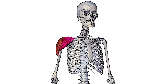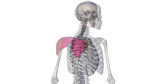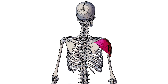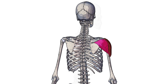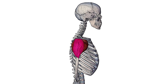The deltoid muscle is comprised of three heads. Here we can see highlighted the anterior head, here's the lateral head and here's the posterior head. One thing to note about the lateral head is that it's mistakenly called the medial head of the deltoid by some people.